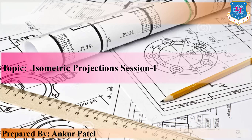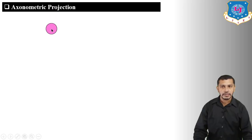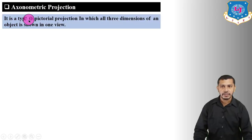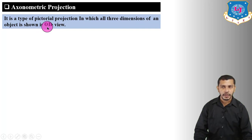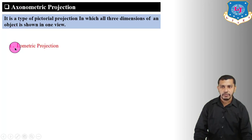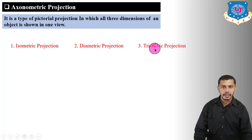Isometric projection is one type of axonometric projection. Axonometric projection is a type of pictorial projection in which all three dimensions of an object are shown in one view. There are basically three types of axonometric projections: isometric projection, diametric projection, and trimetric projection.